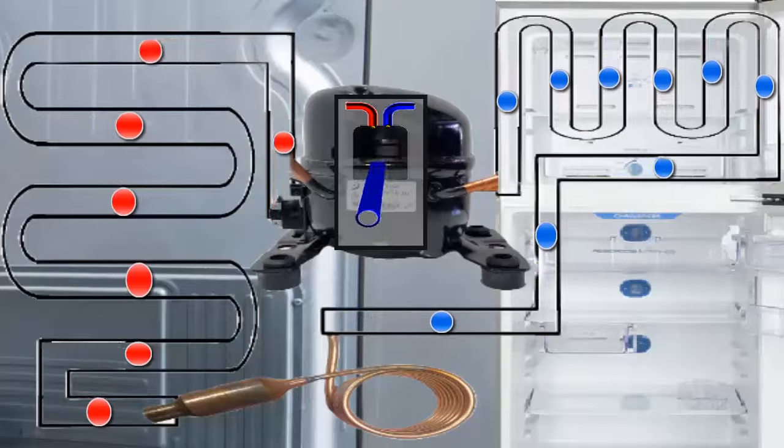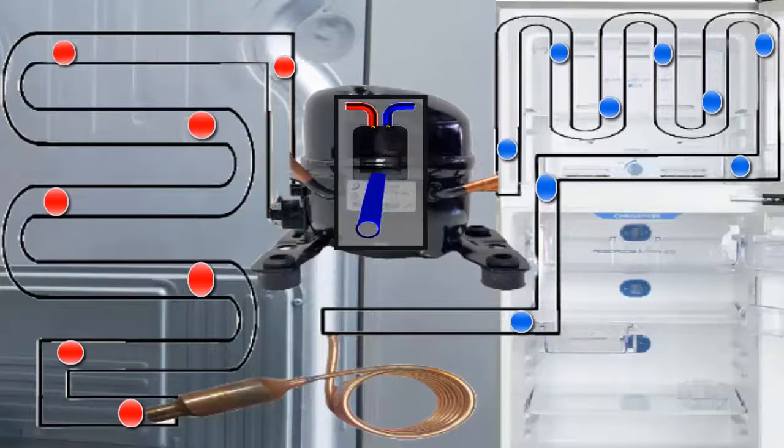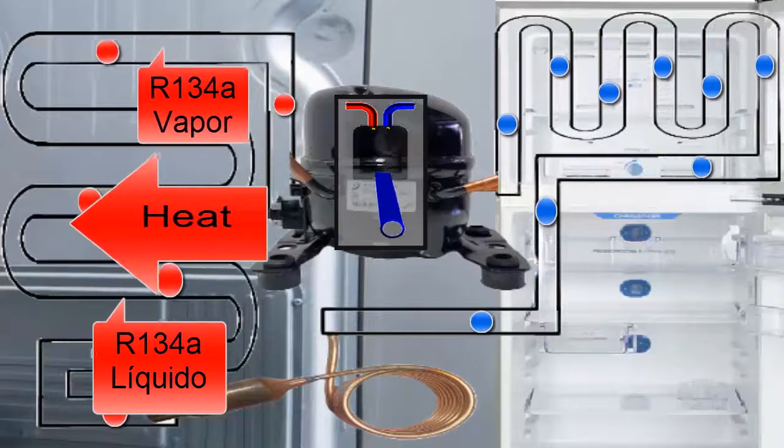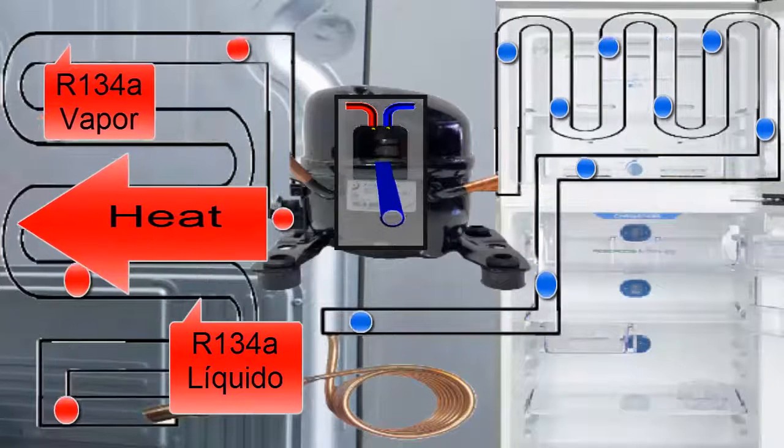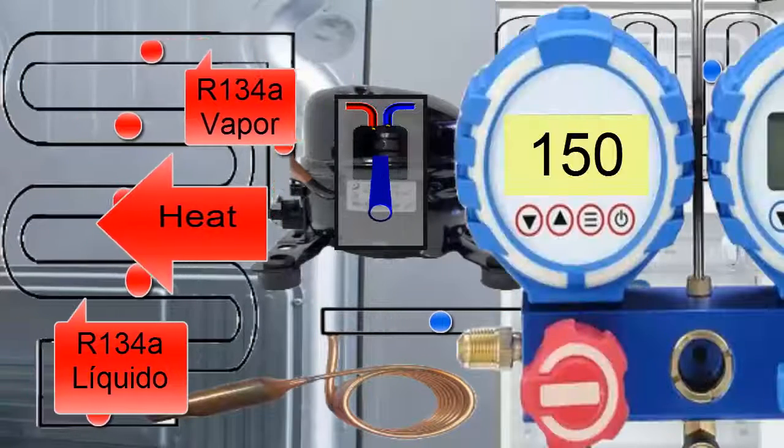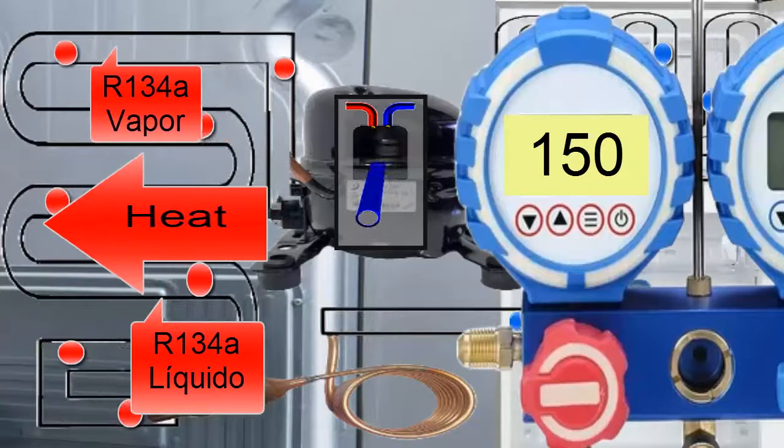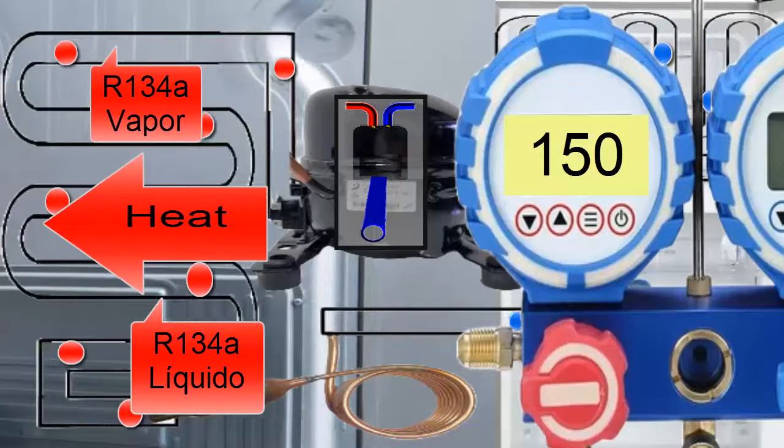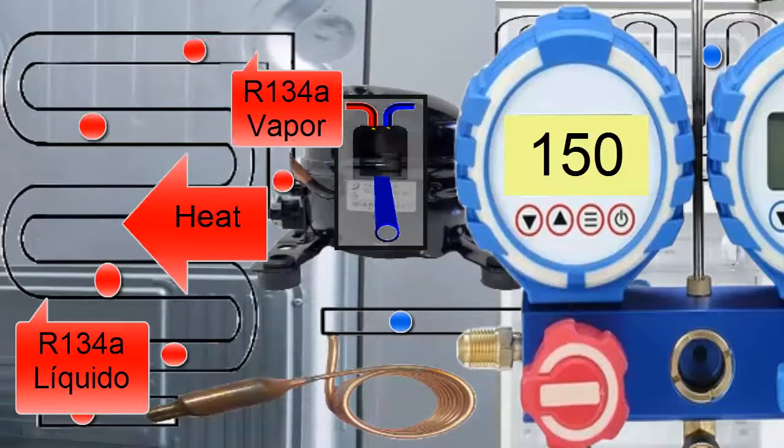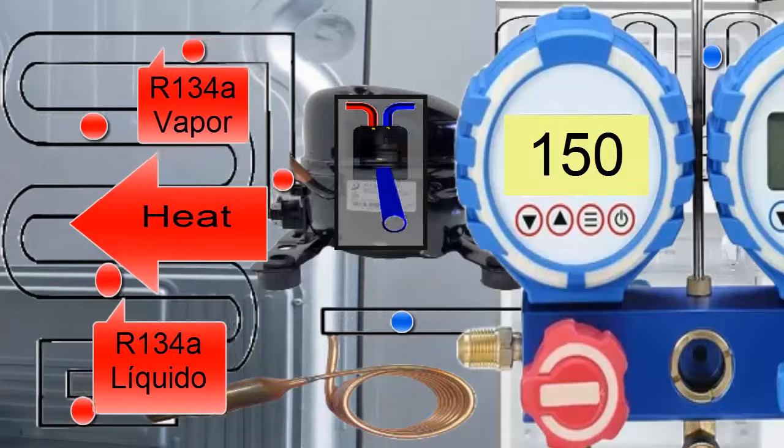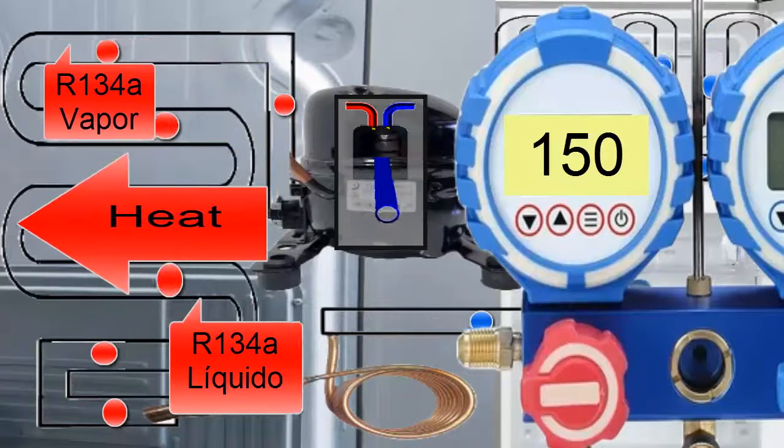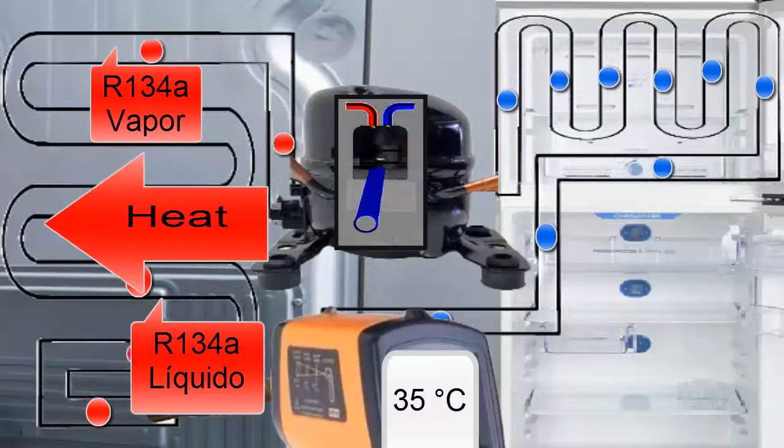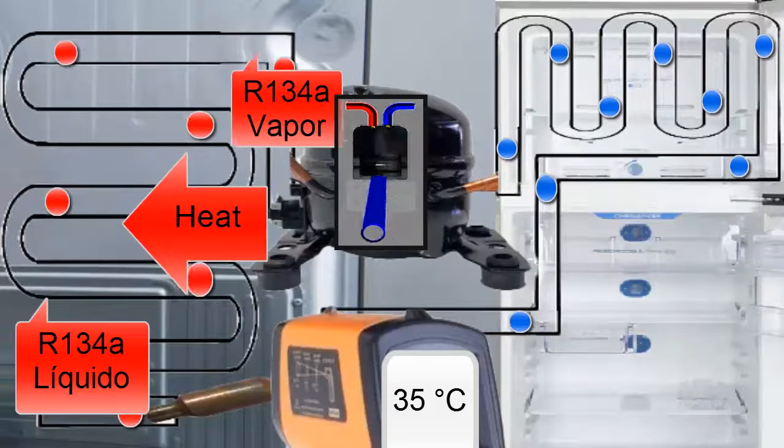As the R134A refrigerant loses heat in the condenser, it changes from a gaseous state to a liquid state. The pressure of the R134A refrigerant remains at 150 pounds per square inch, but the R134A decreases its temperature considerably. This decrease in temperature of the R134A in the condenser allows the refrigerant to transition from a vapor state to a liquid state.